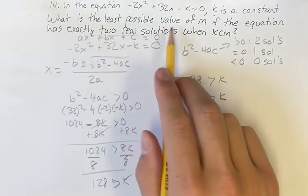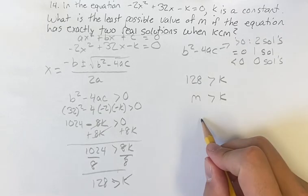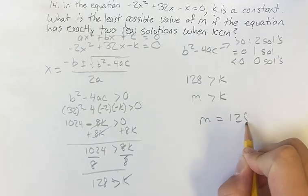So our least possible value of m, if the solution has exactly two real solutions, is m equals 128.